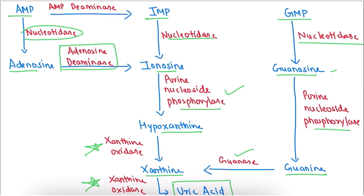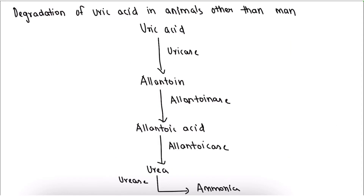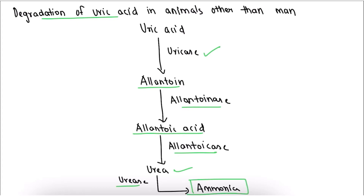In humans, uric acid is the final degraded product of purines. However, in animals other than humans, uric acid gets further converted: uric acid is converted into allantoin by uricase, allantoin is converted into allantoic acid by allantoinase, and allantoic acid is converted into urea by allantoicase, and finally with urease into ammonia. So ammonia is the final degraded product of purines in other animals.